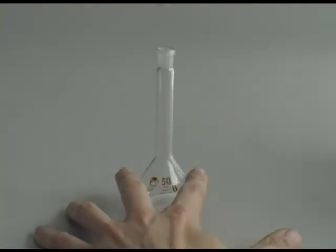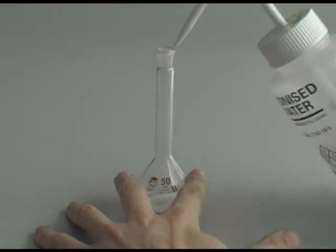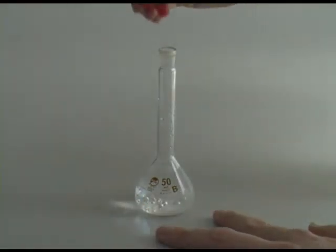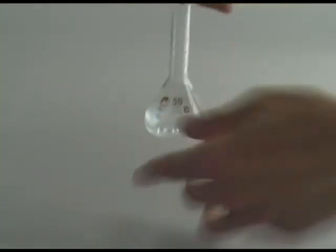Now we can add water to the citric acid inside the volumetric flask. Initially we don't fill right up to the line. We leave some space, we put the stopper in, and we invert the flask several times to dissolve the citric acid.